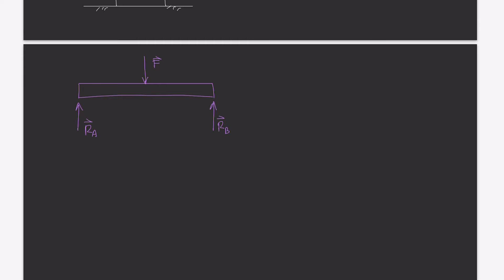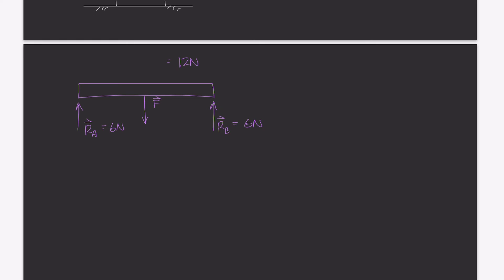If the force is 12 newtons, you can intuitively see that Ra is about 6 newtons and Rb is about 6 newtons. That is true regardless of where this force is along the line of action — whether moved to the bottom of the bar or somewhere in the middle, Ra and Rb will still each be 6 newtons.